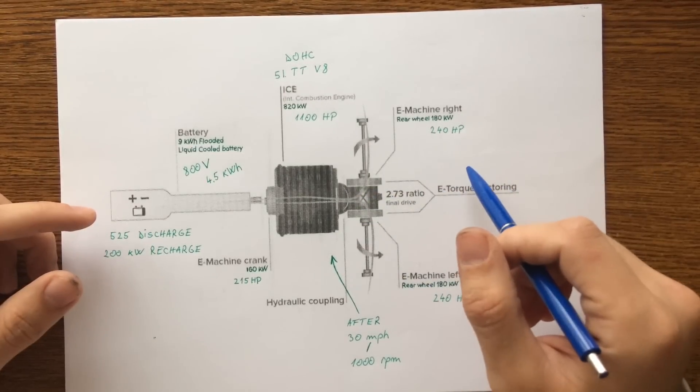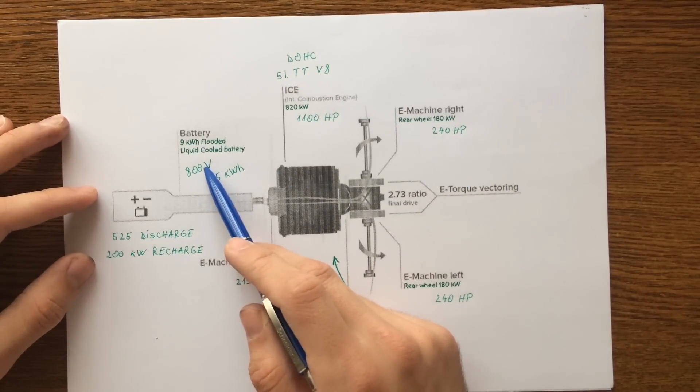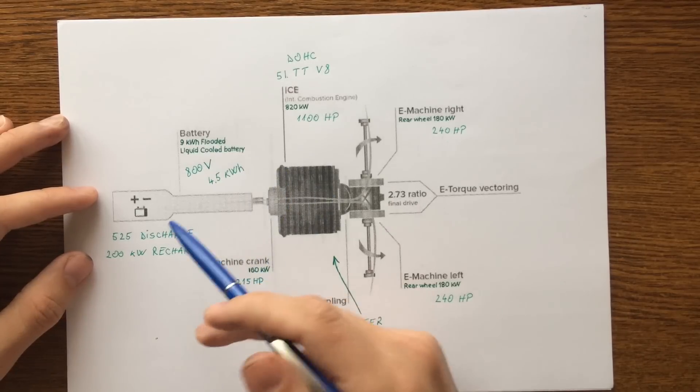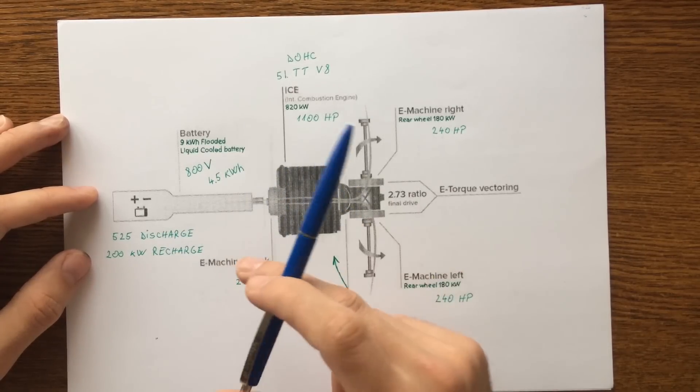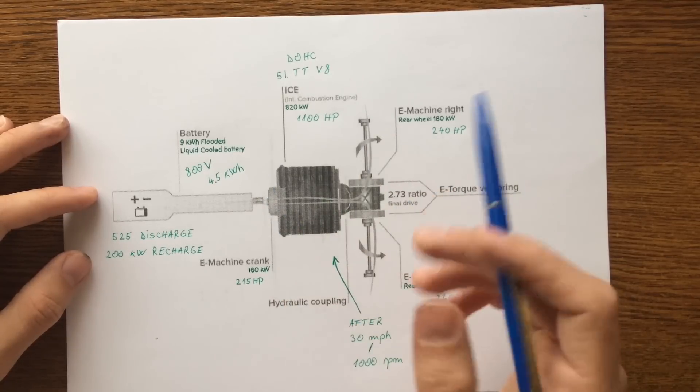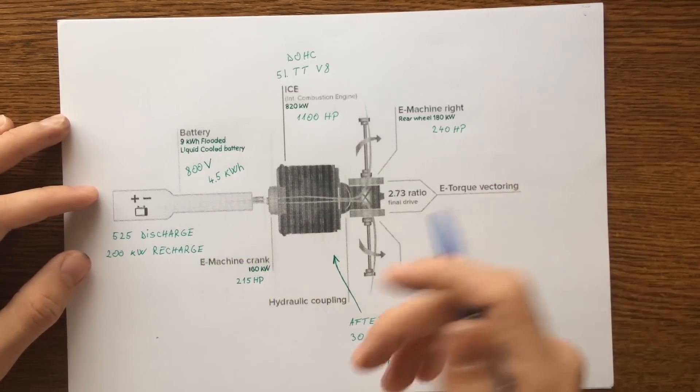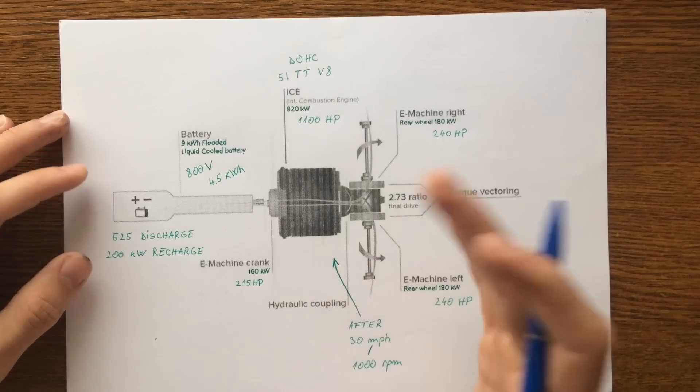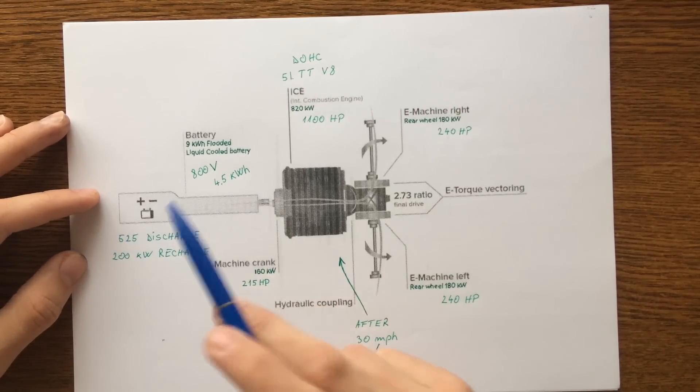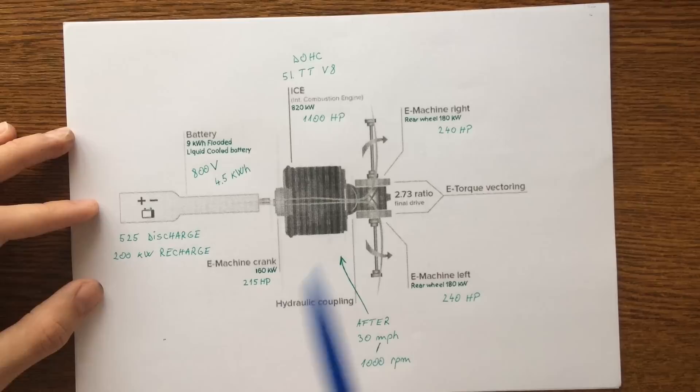So after all the research and testing has resulted in an 800 volt battery, a liquid cooled battery, a 4.5 kilowatt hour battery pack, making this car the world's first 800 volt production car. This extreme battery technology will now provide an amazing 525 kilowatt of discharge and up to 200 kilowatt of recharge.